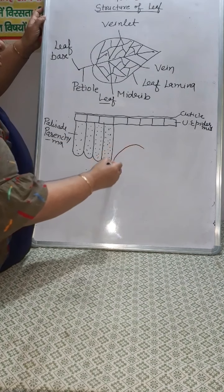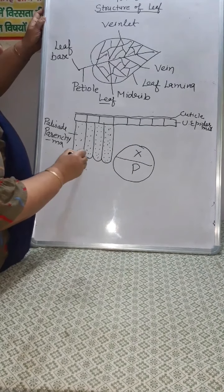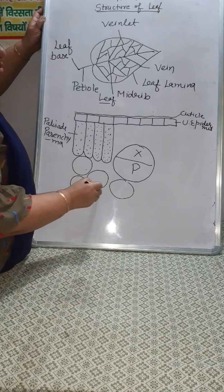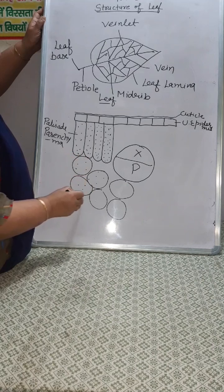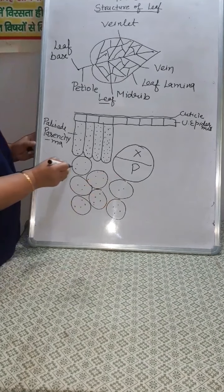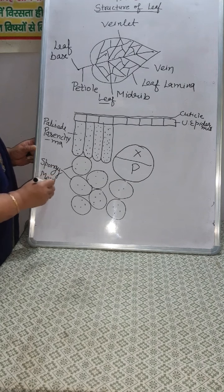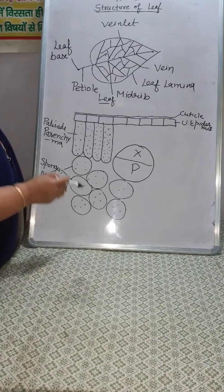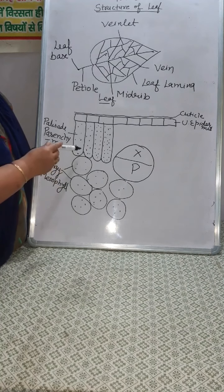Here are present vascular bundles which contain both xylem and phloem. Then there is also a type of parenchyma that is loosely arranged, and this parenchyma has a small amount of chlorophyll. This parenchyma is called spongy mesophyll. It is called spongy due to the presence of air spaces. The amount of chlorophyll is very less in spongy mesophyll as compared to palisade parenchyma, and here air cavities are present.